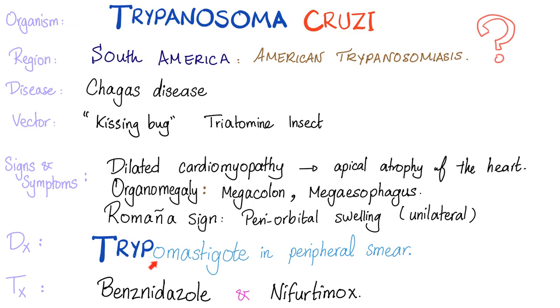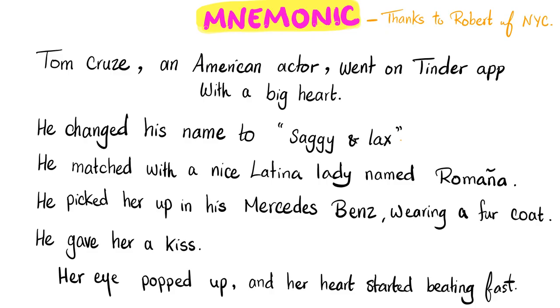How do you diagnose it? Look at the trypo — because it's Trypanosoma — mastigotes in the peripheral blood smear. How do you treat it? Benznidazole and Nifurtimox.